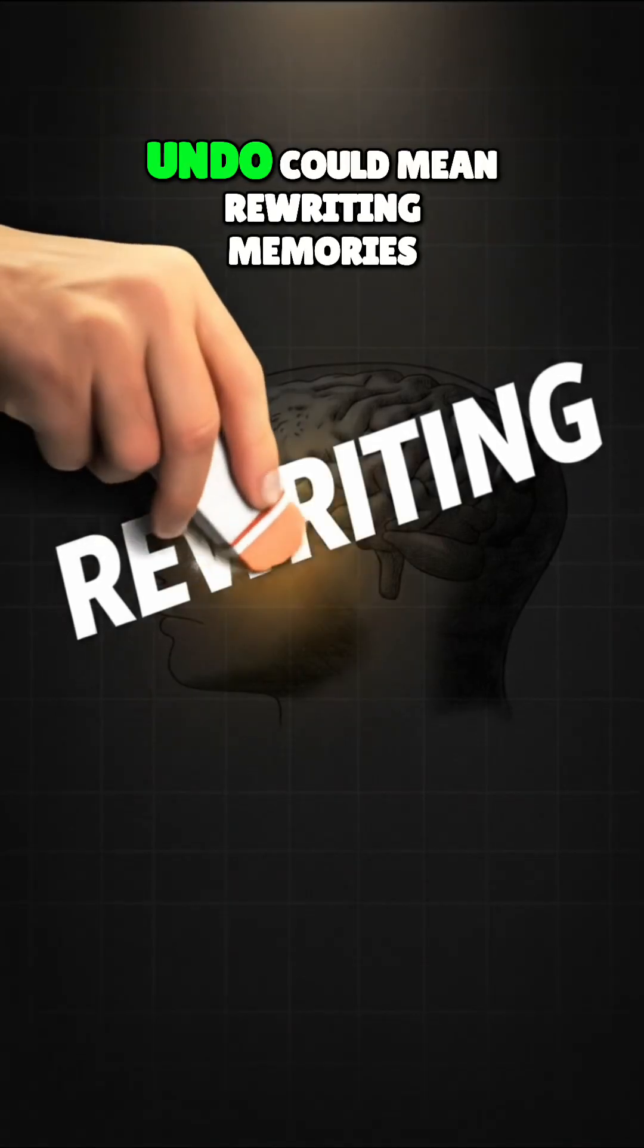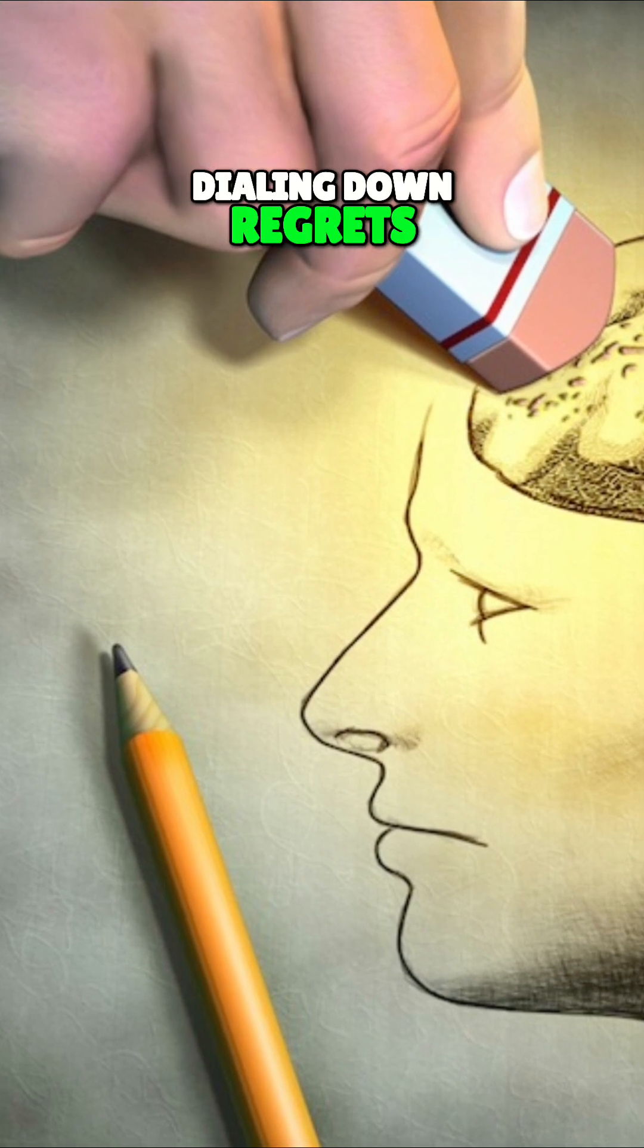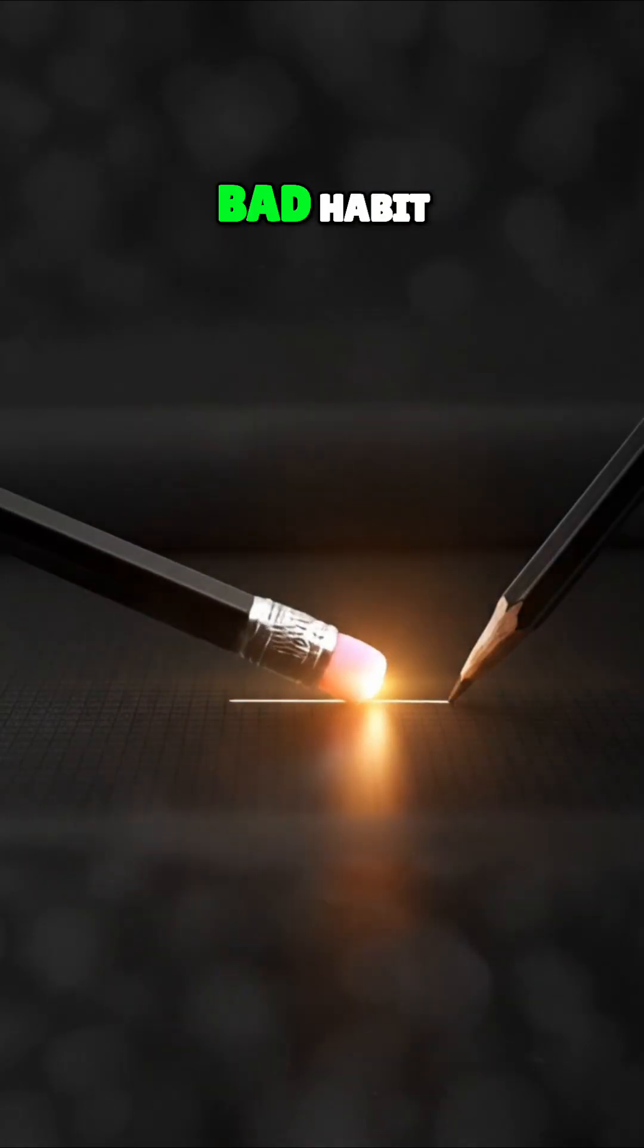In brain terms, undo could mean rewriting memories, dialing down regrets, or even erasing a bad habit.